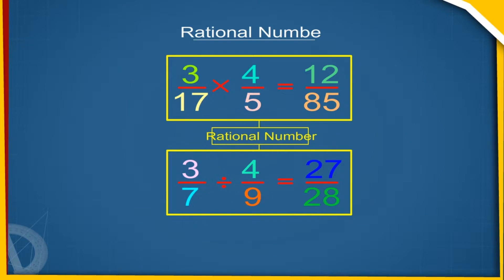All whole numbers and integers are also rational numbers. The negative and reciprocal of a rational number is again a rational number. Between two rational numbers, there lies an unlimited number of rational numbers.